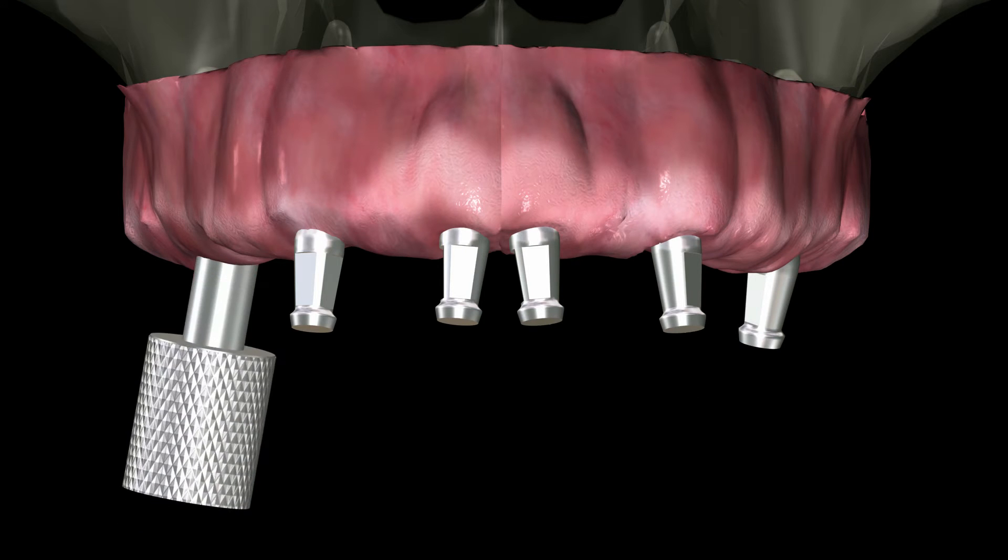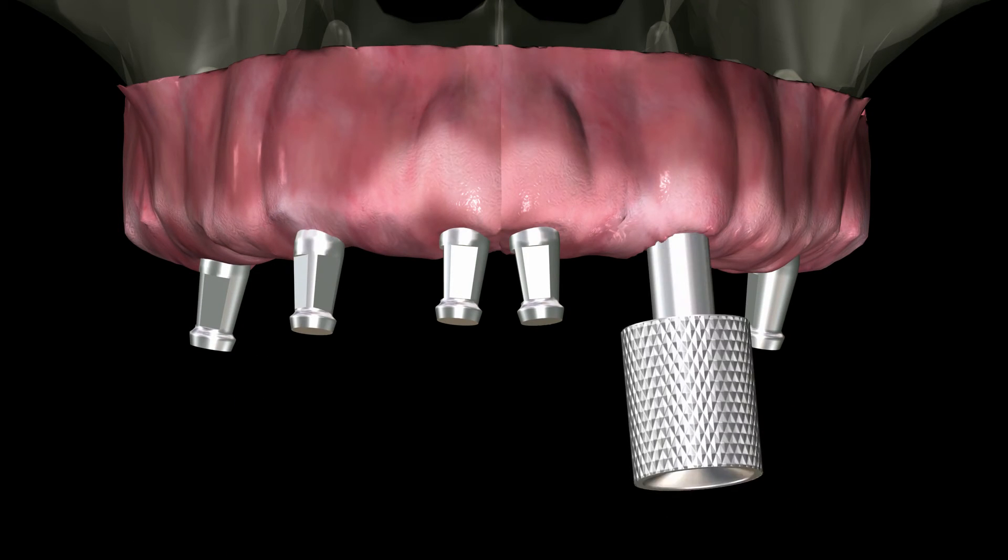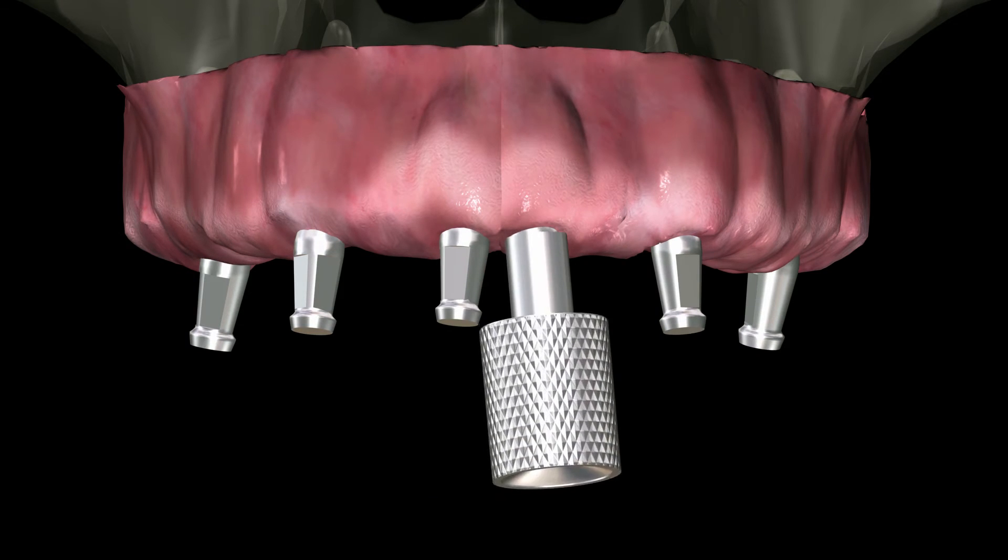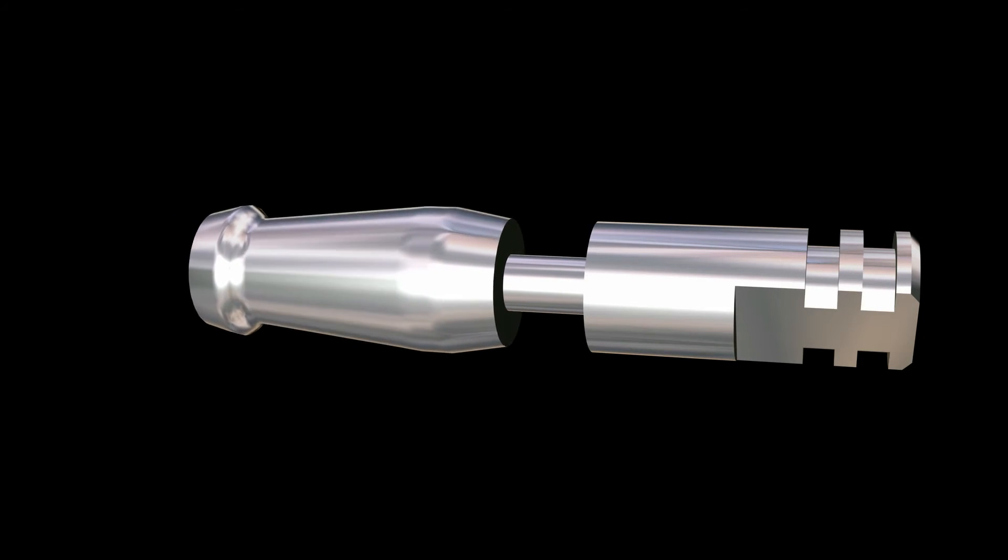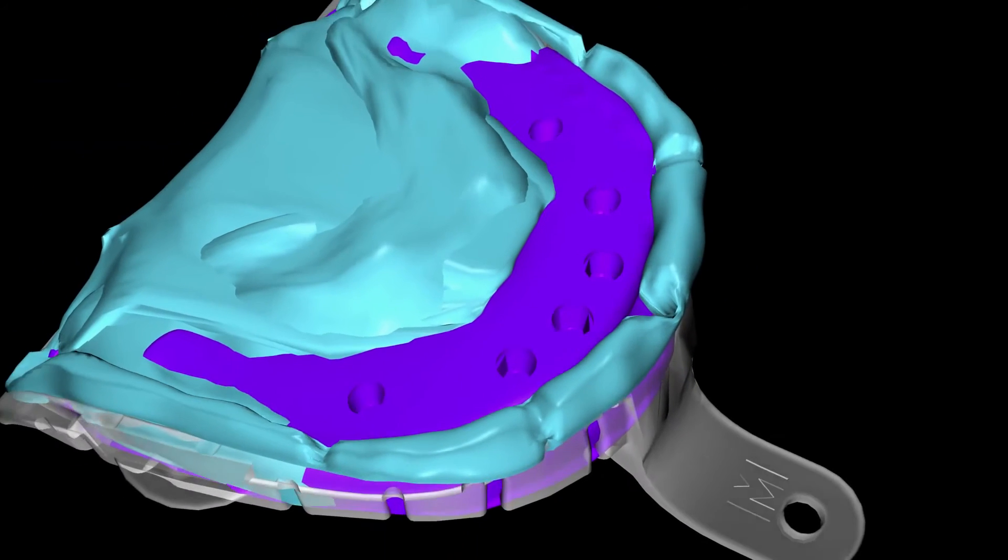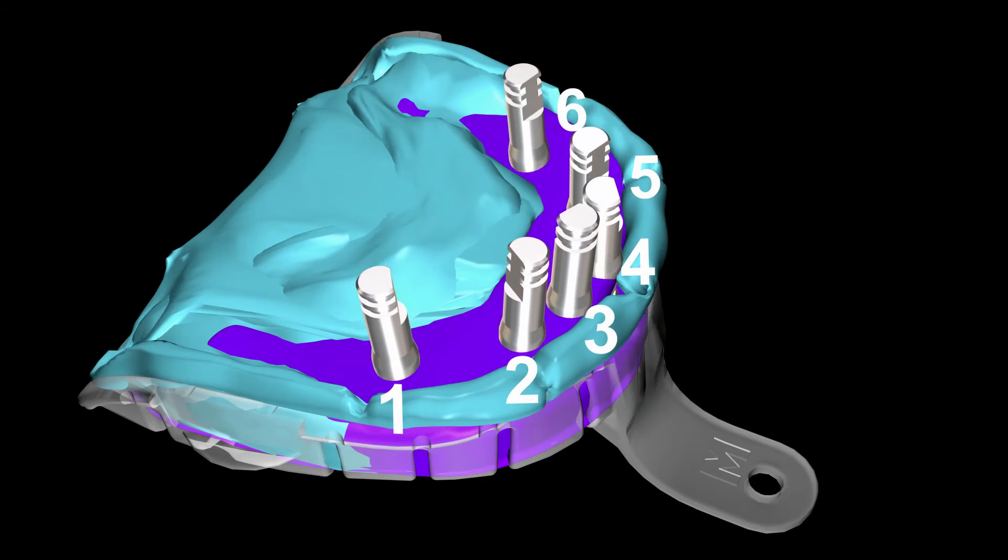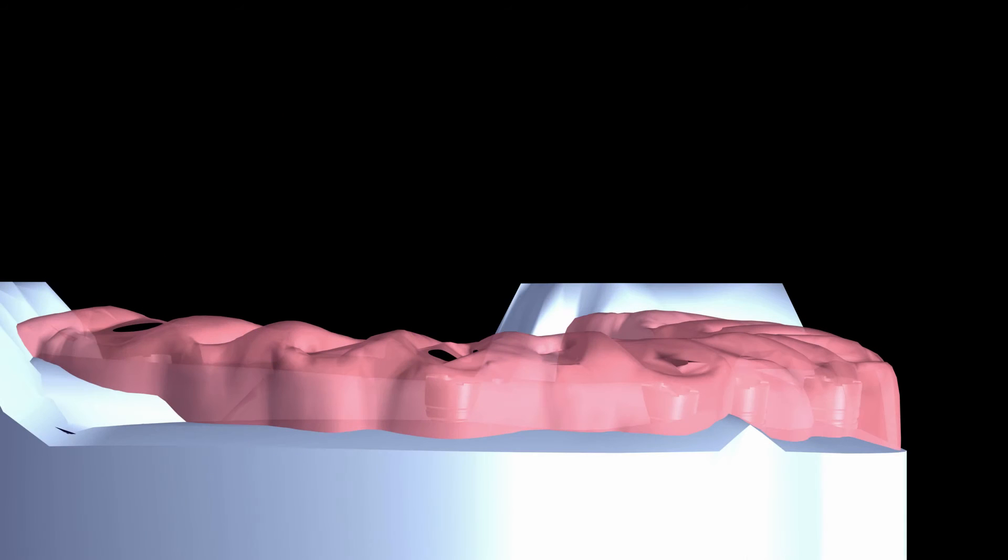Using the friction driver, it is easy to just unscrew the non-engaging copings. To avoid thread time discrepancies, remove the impression copings one at a time. Connect the appropriate implant replica and insert the unit back into the correct location in the impression, guided by two large flat sides. It is important to make a soft tissue model to allow complete seating of the abutments.